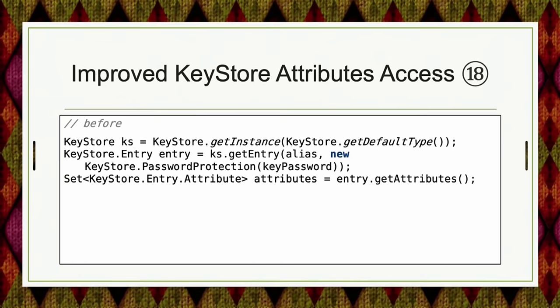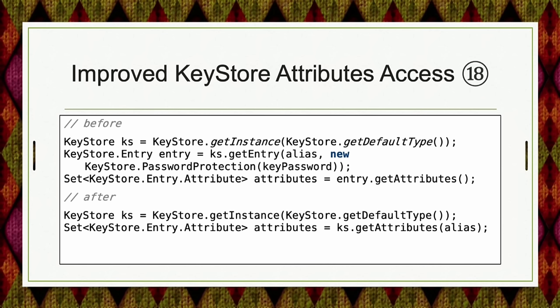There are also new APIs for obtaining access to attributes in a KeyStore. Before JDK 18, you first needed to get an Entry from the KeyStore, then call getAttributes() on that entry — an extra object you may not need. Now you can access the attributes directly on the KeyStore. It's not just less code — it's about not having an extra intermediate object when you don't need it.